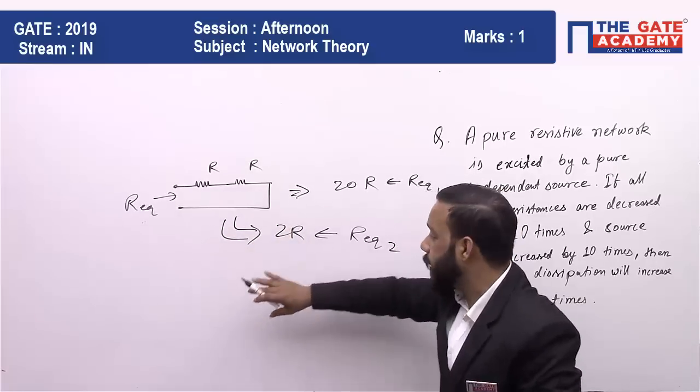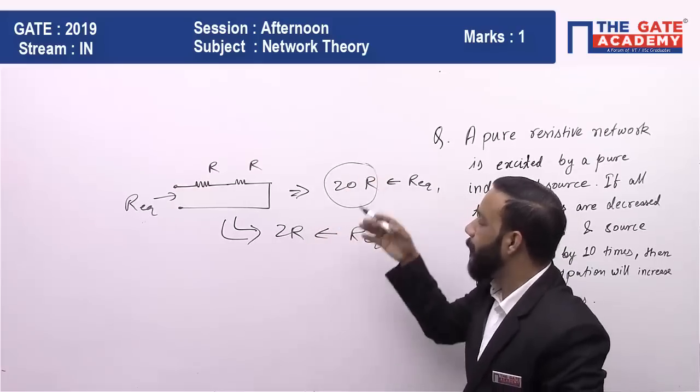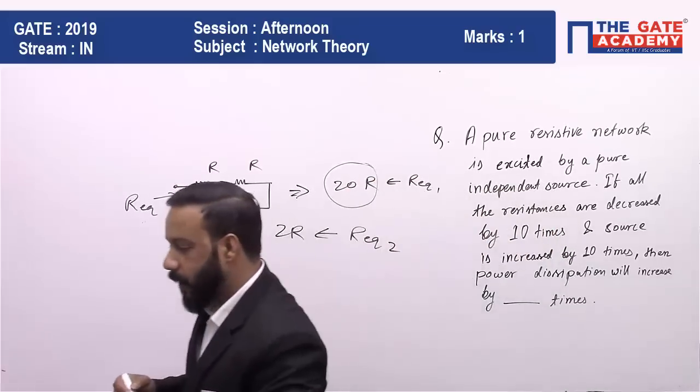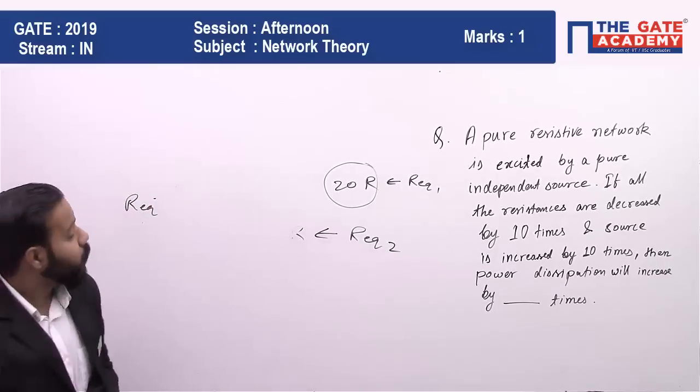If resistances are decreased 10 times, the equivalent resistance which was 20 before becomes 2, meaning the equivalent resistance also decreases by 10 times. Now, if they are in parallel, we can also check.